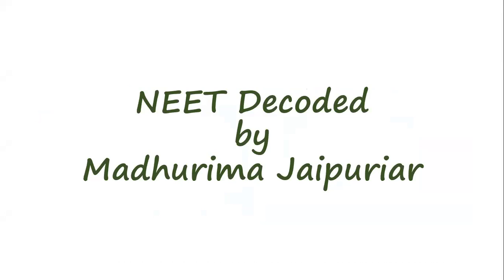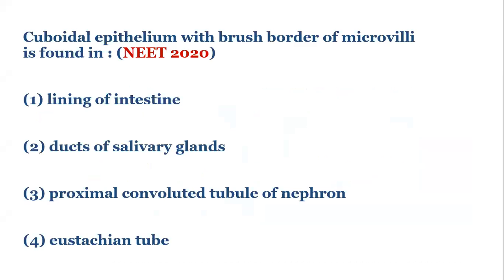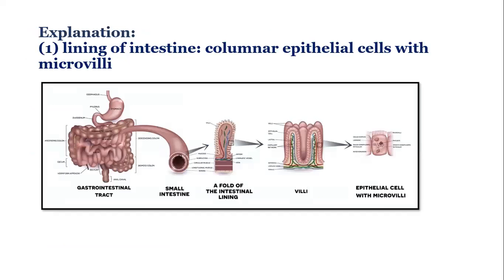Hello and welcome back to NEET Decoded. Hope you have gone through the previous videos in the NEET MCQ series. In this video, a new question will be discussed. The question is: cuboidal epithelium with brush border of microvilli is found in — one: lining of intestine, two: ducts of salivary glands, three: proximal convoluted tubule of nephron, and four: Eustachian tube. Let's move on to the explanation.